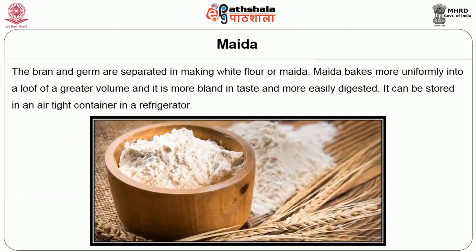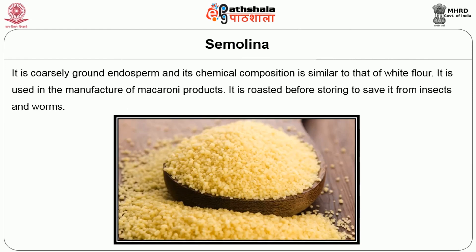Next is maida. The bran and germ are separated in making white flour or maida. Maida bakes more uniformly into a loaf of greater volume, is more bland in taste and more easily digested. It can be stored in an airtight container or in a refrigerator. Semolina is coarsely ground endosperm and its chemical composition is similar to that of white flour. It is used in the manufacture of macaroni products and is roasted before storing to save it from insects and worms.